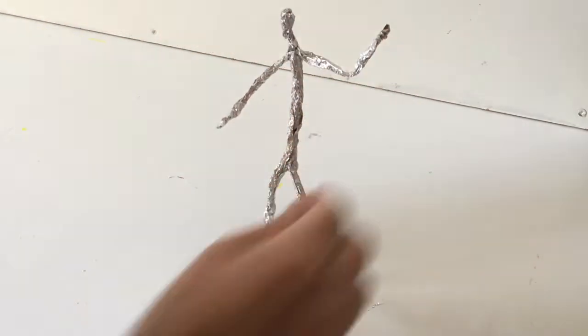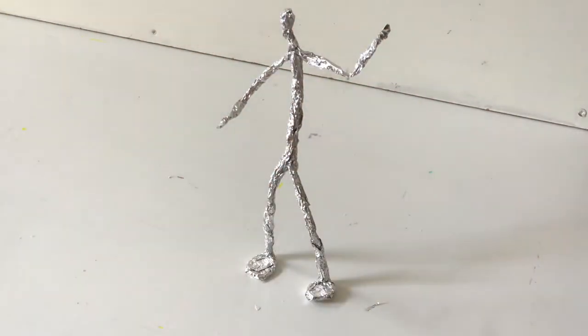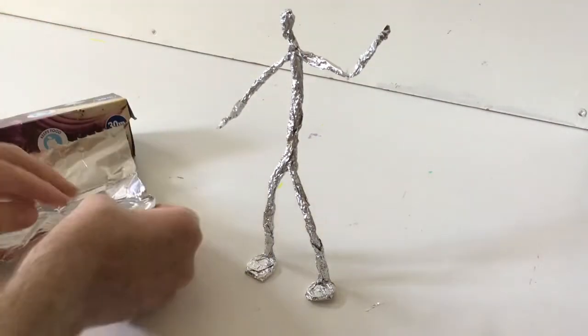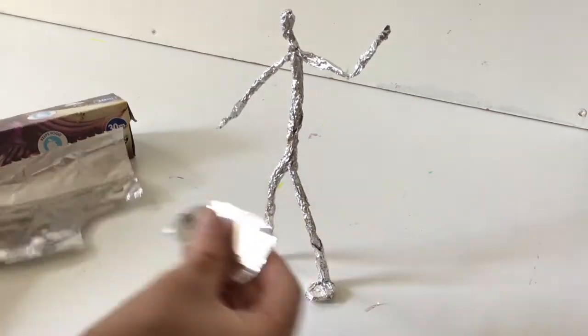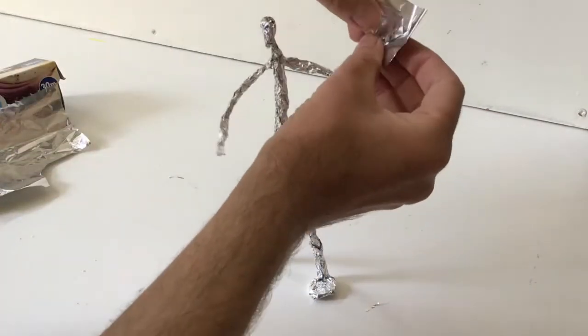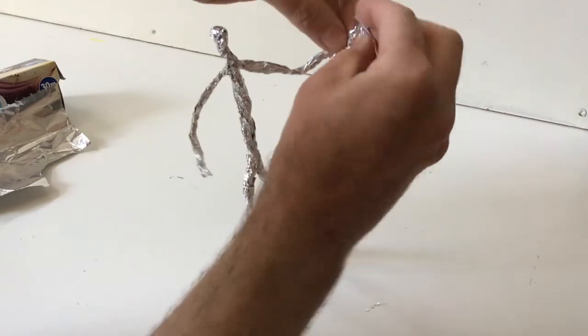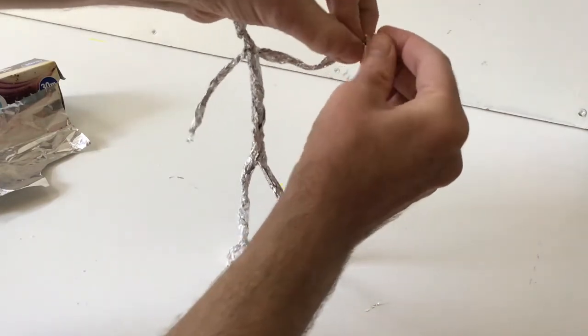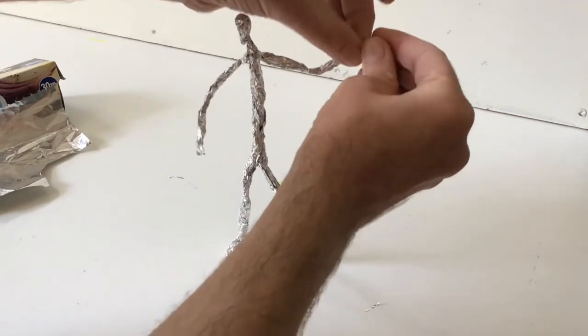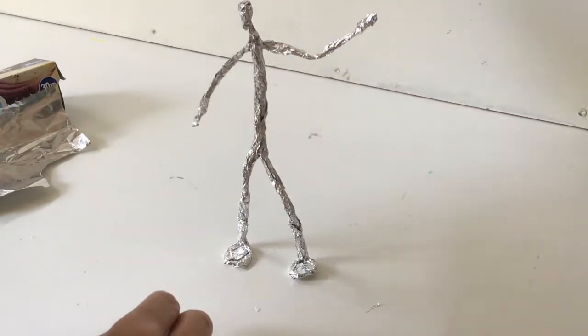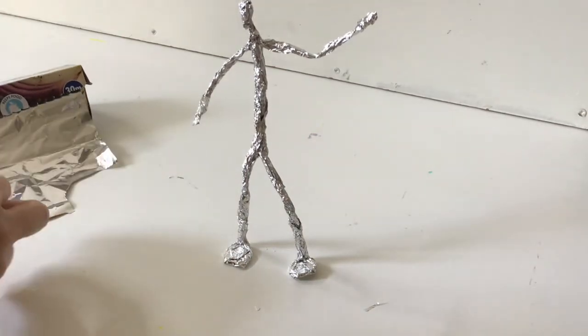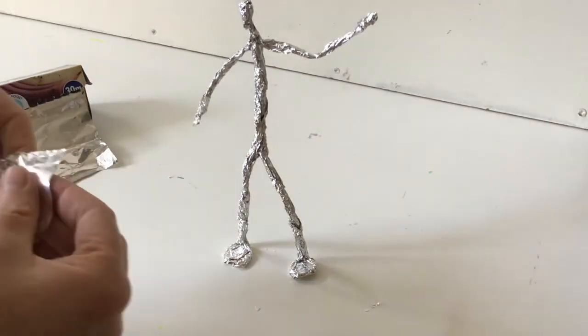And then this is the point where you want to start really playing around with the body and thinking about how you want it to be posed. You might want to make something as well, so perhaps this is a tennis player that you're making and you might want to make a tennis racket, or you might want to make a football that they're about to kick, or it could be a rugby ball or a netball. Or maybe yours is doing highland dancing and you're going to make some swords that it's going to be dancing over.